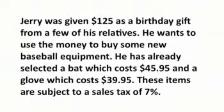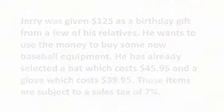Jerry was given $125 as a birthday gift from a few of his relatives. He wants to use the money to buy some new baseball equipment. He has already selected a bat which costs $45.95 and a glove which costs $39.95. These items are subject to a sales tax of 7%.